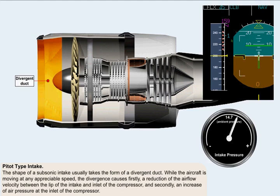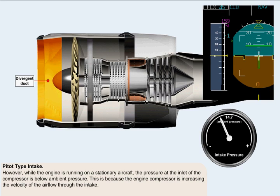The shape of a subsonic intake usually takes the form of a divergent duct. While the aircraft is moving at any appreciable speed, the divergence causes firstly a reduction of the airflow velocity between the lip of the intake and the inlet of the compressor, and secondly an increase of air pressure at the inlet of the compressor. However, while the engine is running on a stationary aircraft, the pressure at the inlet of the compressor is below ambient pressure. This is because the engine compressor is increasing the velocity of the airflow through the intake.